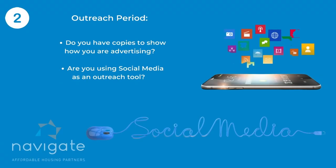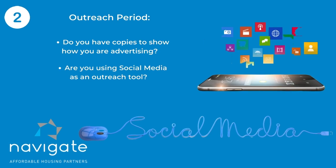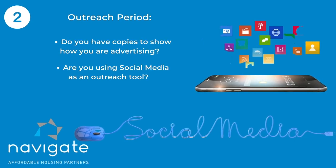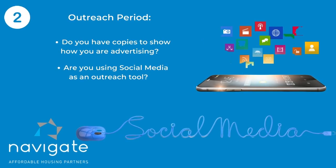Next we're going to talk about the outreach period. The reviewer might ask you if he or she can review some of the latest marketing tools that you have used to advertise the property. So if you have gone by your Affirmative Fair Housing Marketing Plan, you can show them those items. Or if you have something new that you're doing — you might be doing social media — make sure that you keep a copy of whatever type of advertising or outreach that you have been doing.